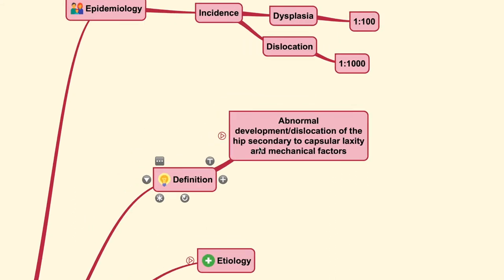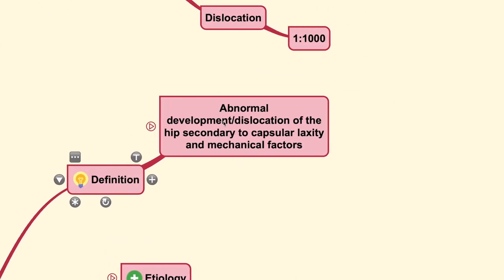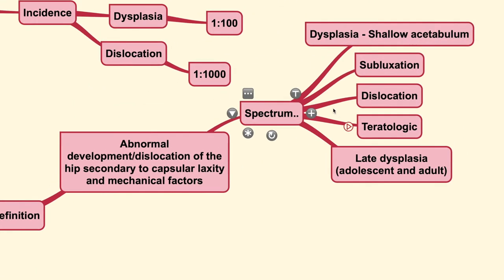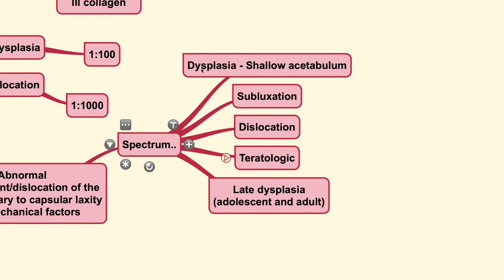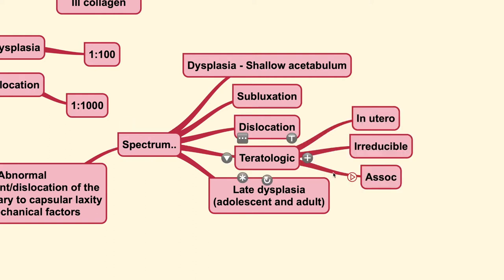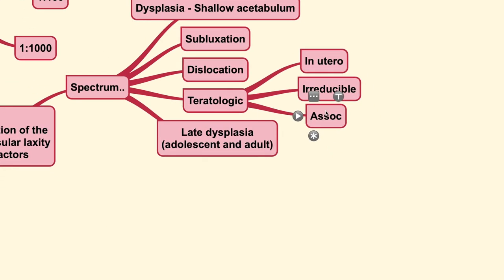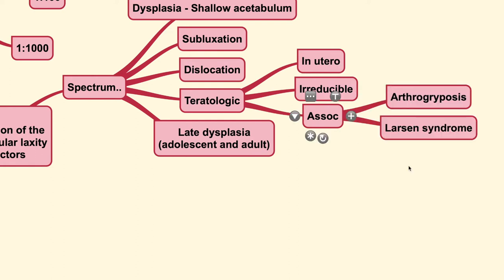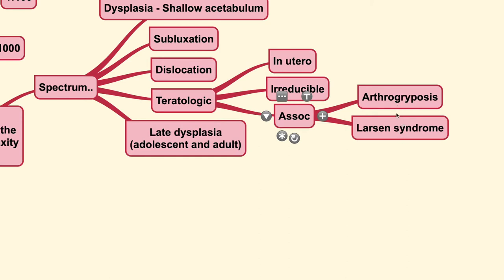DDH is actually an abnormal development or dislocation of the hip, caused secondary to capsular laxity and other mechanical factors. There are various spectrums of this condition: it could start with dysplasia, where the acetabulum or bowl that covers the femoral head is shallow; progress to a subluxated or dislocated condition; or even be a teratologic type. The teratologic subtype occurs in utero, is usually irreducible, and is frequently associated with arthrogryposis and Larson syndrome.